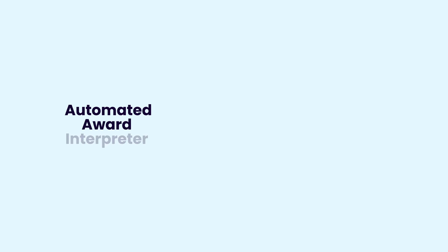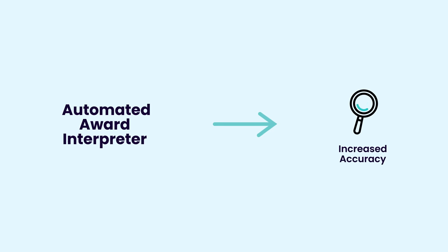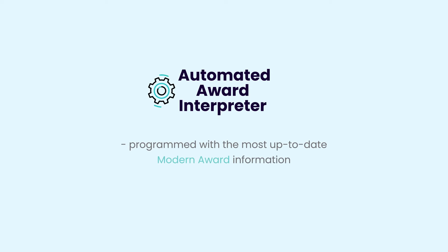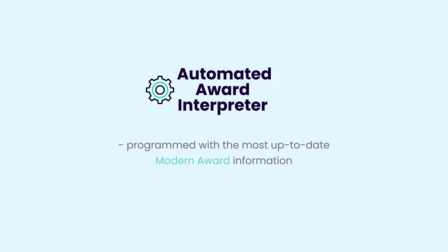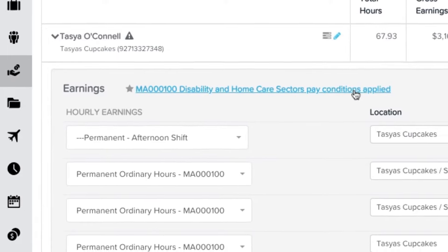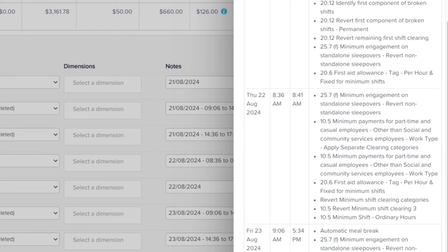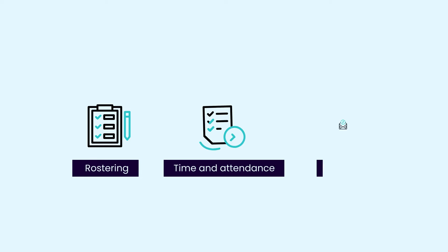The easiest way to keep on top of this is by using automated payroll software. This type of software is designed to simplify compliance with payroll laws and regulations, including modern awards. One of the biggest benefits of using an automated award interpreter is increased accuracy — the software is programmed with the most up-to-date modern award information, so you can be confident your employees are being paid correctly. Some payroll software even comes with pre-built modern award templates, with award interpretations built in from day one, helping ensure compliance across rostering, time and attendance, and payroll.